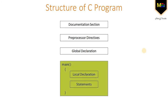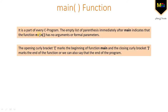Next is the main function. The main function is a part of every C program — this is very important to remember. The empty parentheses immediately after main indicates that the function main has no arguments or formal parameters, which will be discussed later when we cover functions. The opening curly bracket marks the beginning of function main, and the closing curly bracket marks the end of the function or program.